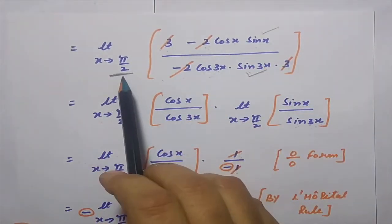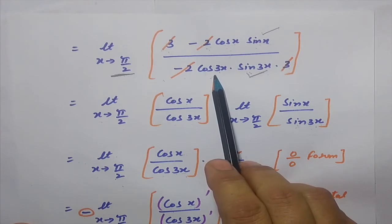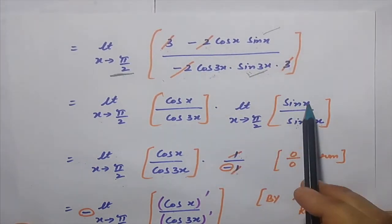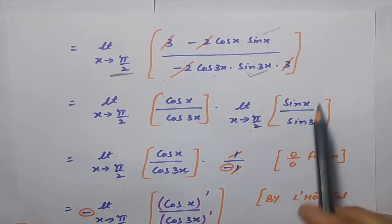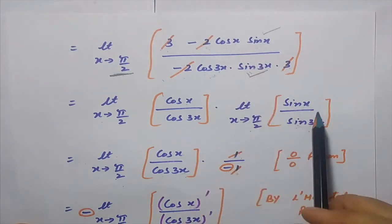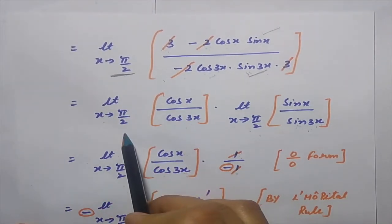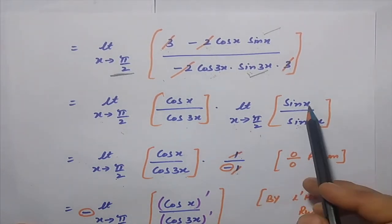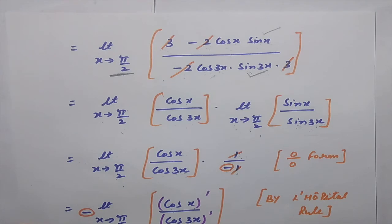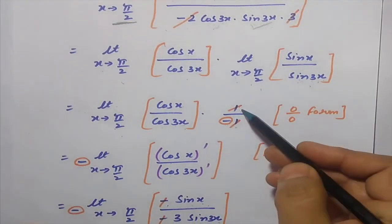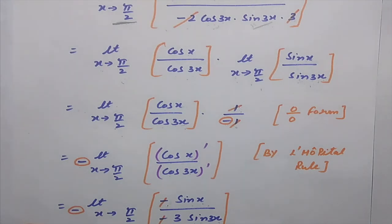Even after cancellation, if we approach π/2 directly, the remaining expression still gives 0 by 0. However, we can handle sin(x) and sin(3x) separately: sin(π/2) equals 1, and sin(3π/2) equals minus 1 — same magnitude, opposite sign. So sin(x)/sin(3x) evaluated at x = π/2 gives 1/(−1) = −1, and the two terms cancel, leaving the cosine part.